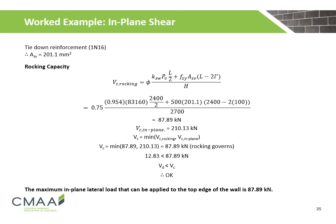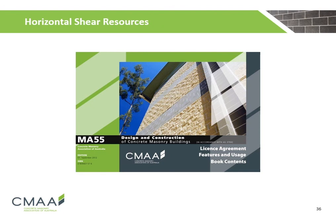The area of the N16 tie-down reinforcement is calculated to be 201.1 mm². The rocking capacity is calculated to be 87.89 kN, which is greater than the design shear loading of 12.83 kN. However, the rocking capacity is less than the in-plane shear capacity, which means rocking failure will occur before in-plane shear failure. Thus the maximum in-plane lateral load that can be applied to the top edge of the wall is 87.89 kN.